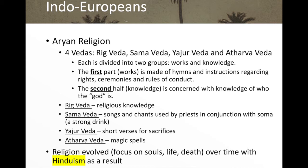Each of these writings is divided into two groups: a section for works and a section for knowledge. The works section is made up of hymns, songs, and instructions regarding rites, ceremonies, and rules of conduct — basically instructing people how to act. The knowledge section is concerned with understanding who the god of that Veda is.